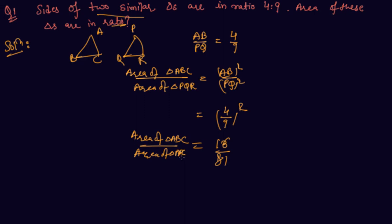Pretty straightforward questions come from this theorem. You either have to find the ratio of area of two triangles given the ratio of their sides, or you have to find the ratio of sides if the ratio of areas of two triangles is given. Let me give you one more example on this.